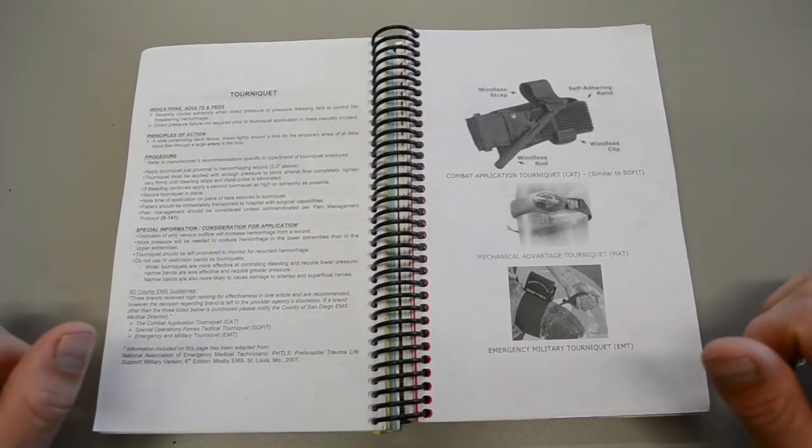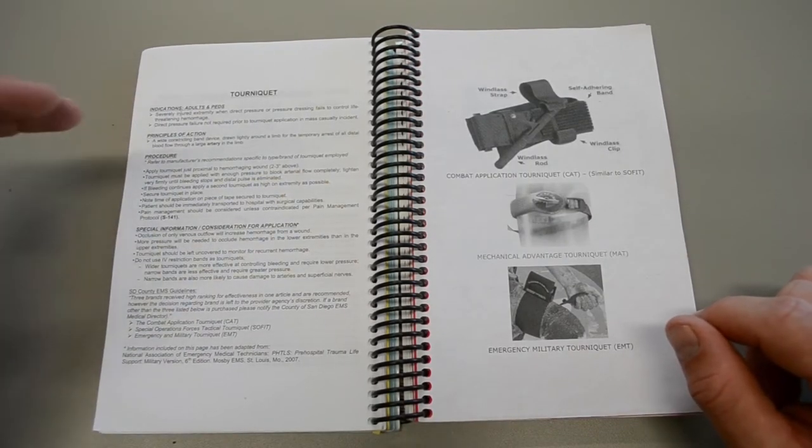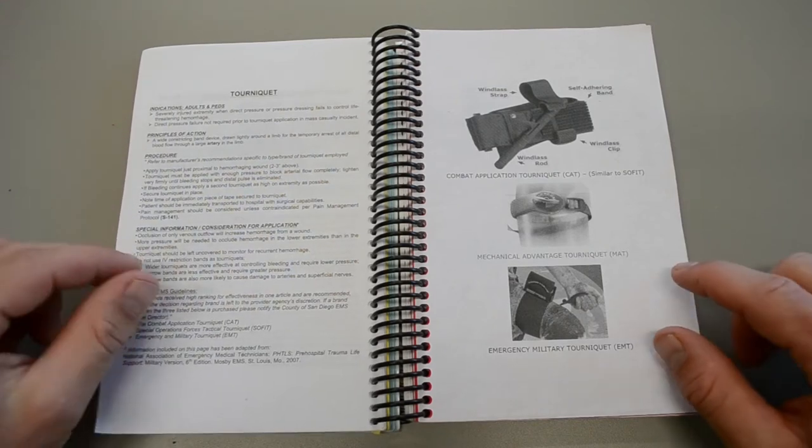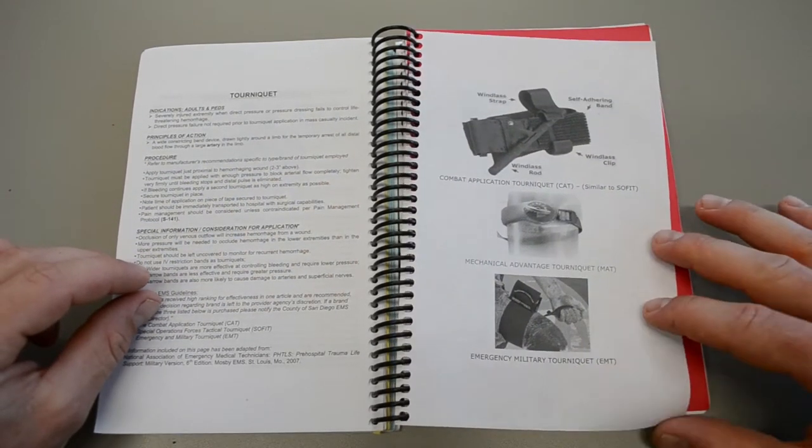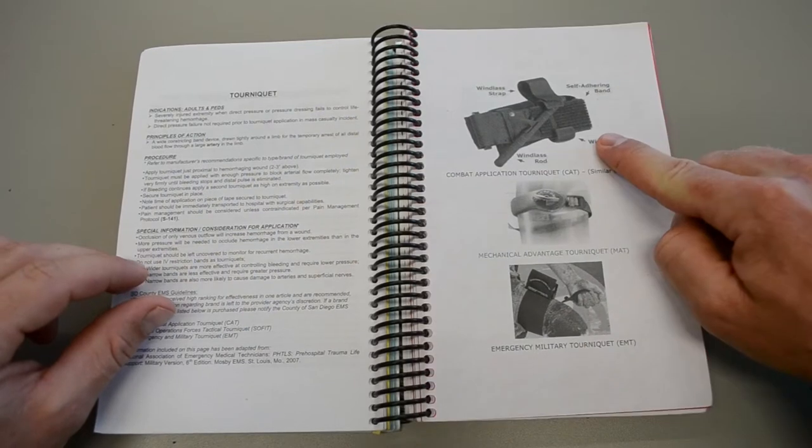This tourniquet skill is BLS. So indications, principles of action, procedures. There's a lot of really good information here. A few of the different types of tourniquets you might see. This is the most common one.